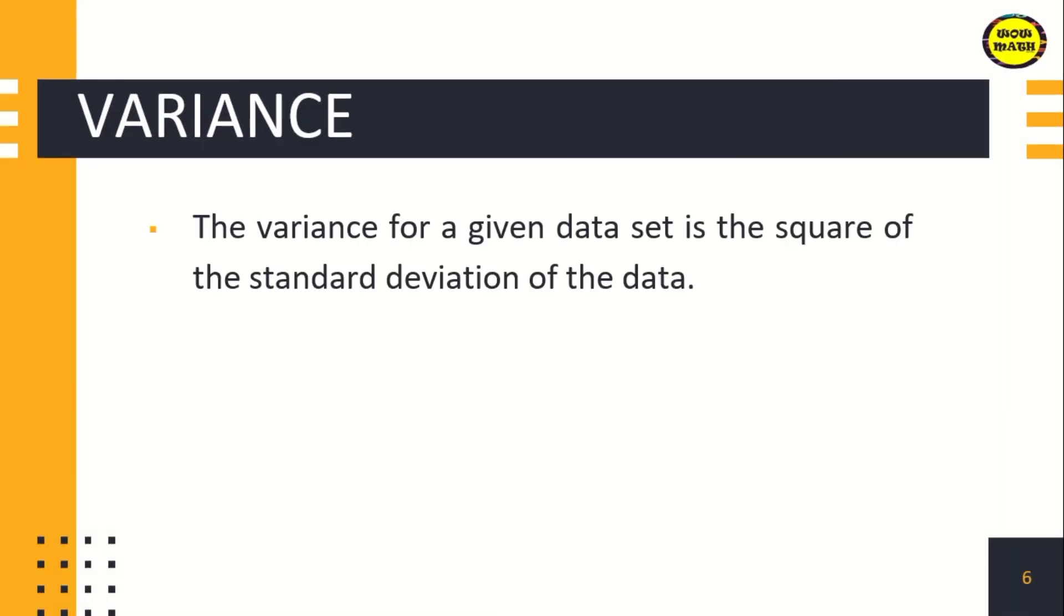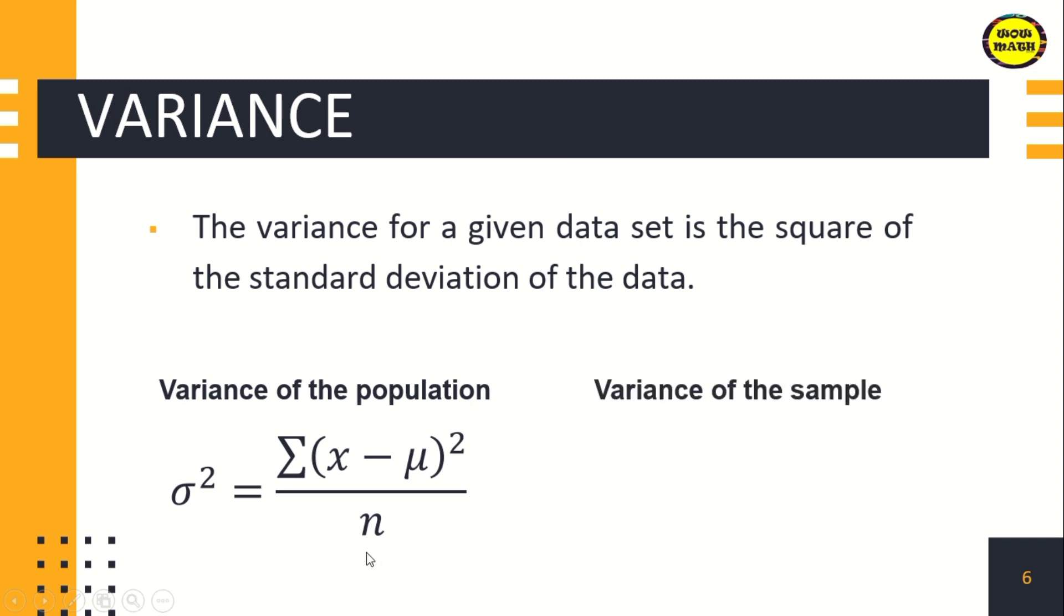Next is the variance. The variance for a given data set is the square of the standard deviation of the data. To compute the variance of the population, we use sigma squared equals the summation of (x minus μ)² over n. To compute the variance of the sample, we use s² equals the summation of (x minus μ)² over n minus 1.